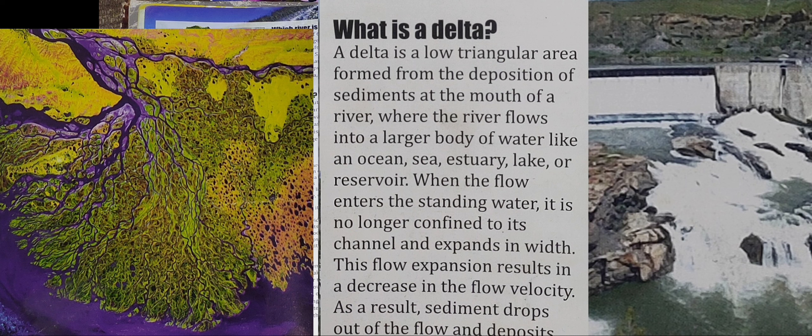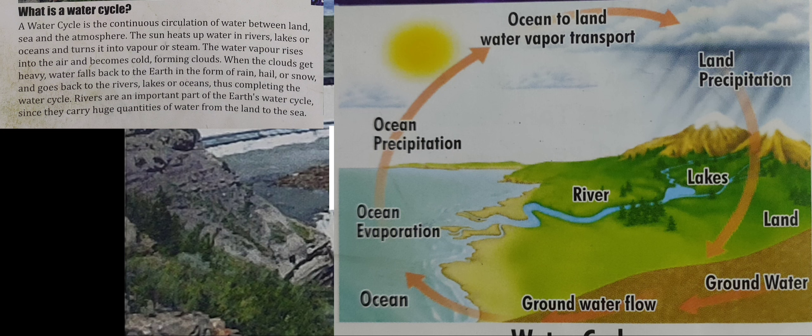What is a water cycle? A water cycle is the continuous circulation of water within the environment, seas, and the atmosphere. The sun heats water in rivers, lakes, or oceans, turning it into vapor or steam.